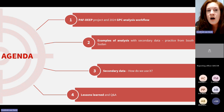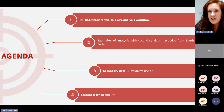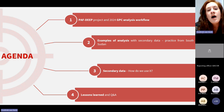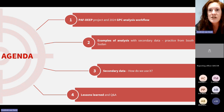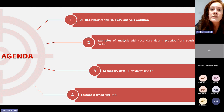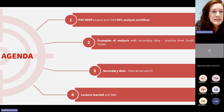We will start with what some of the outputs are from our secondary data analysis — what type of products we actually produce. Dorian will give examples of how this works in South Sudan, and then after we've shown the examples, we'll go through the step-by-step process of how we actually get there, as well as lessons learned on using secondary data for protection analysis and some Q&A at the end. So without further ado, let's get going.